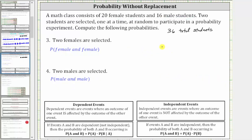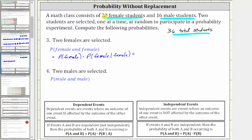Number three is the probability two females are selected, which is the probability of a female and then another female. Because we have dependent events, this equals the probability of a female times the probability of a female given a female has been selected. The probability of a female is 20/36. Because the first student selected was a female, there is one less student and one less female, so there are 19 females out of a total of 35 students. So we have times 19/35.